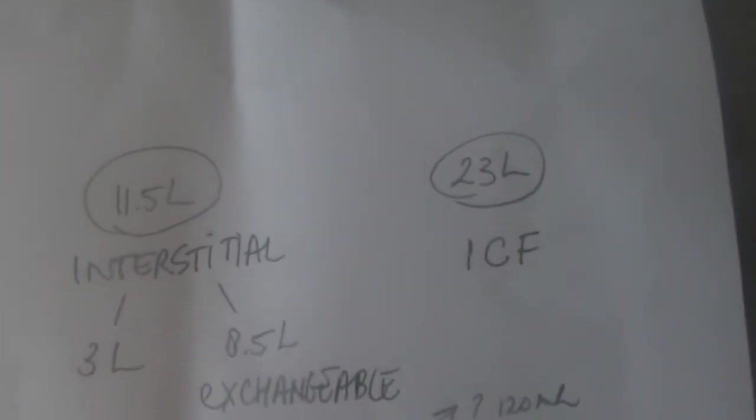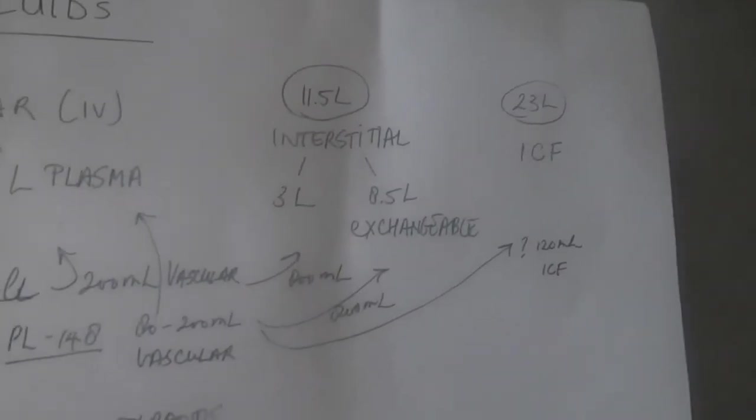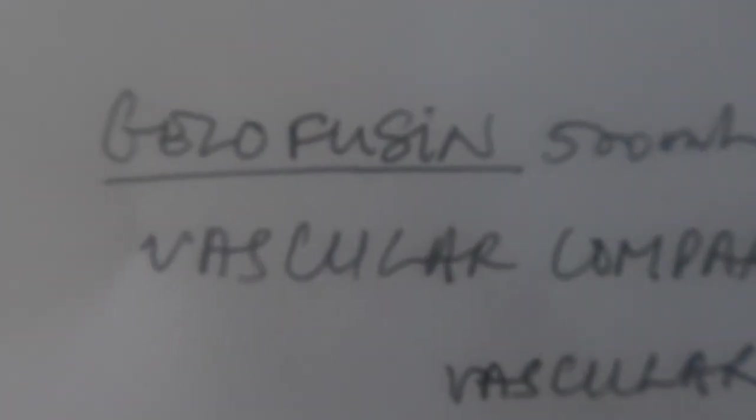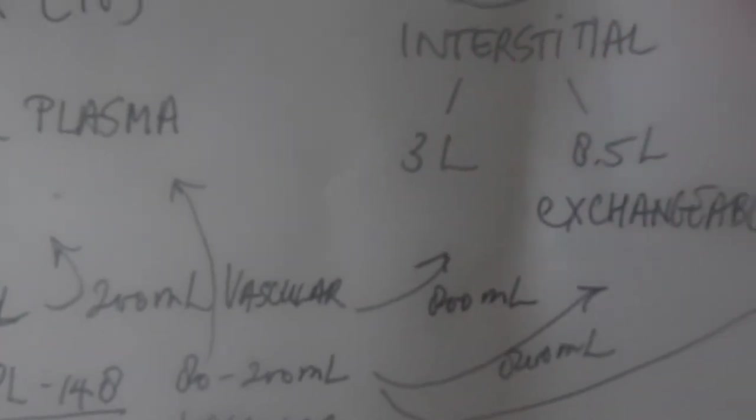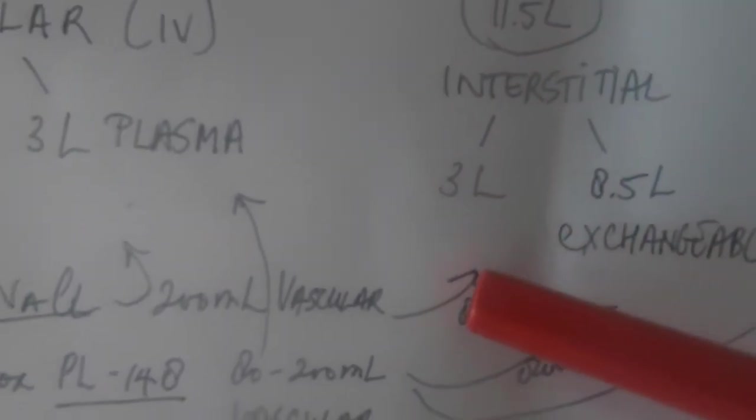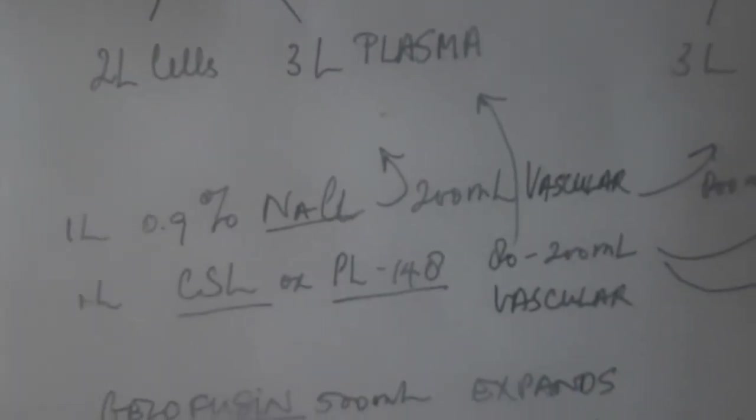Someone asked me, how is that then for things like Gelofusion and Albimax? Albimax comes in two forms - usually the 4% is 500 mils and the 20% is 100 mils. Albimax is a so-called expander, and what it does is it actually takes fluid from the interstitial area and shunts it into the intervascular area. A similar effect is known for Gelofusion, which comes in a 500 mil bag.